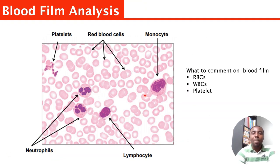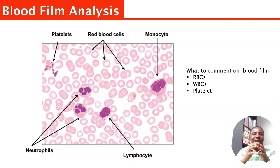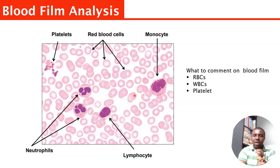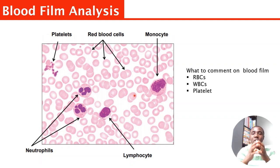This is normal blood cells. You can see normal red blood cells, platelets — those small dots — monocytes, neutrophils, and lymphocytes. Now, when they give you a blood film to comment on in your interview, it's very vital that you comment on all three cells: comment on the red blood cells, comment on the white blood cells, and also comment on the platelets. Don't get distracted — you need to comment on all three.